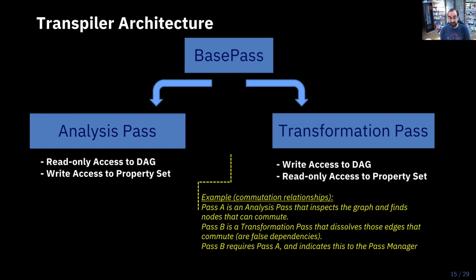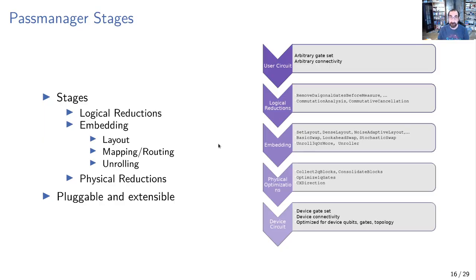The passes are built of two types. We have transformation passes, which transform the DAG — DAG input in, separate DAG output. Then we have analysis passes, which read the DAG, pull some information off of it, and put it in a property set — basically a Python dictionary that tracks certain attributes of the circuit as we go through it. One example is a pass that analyzes commutation relationships; a later pass will then use that information to do a transform.